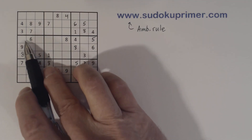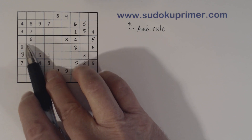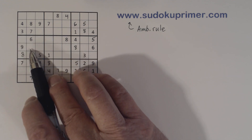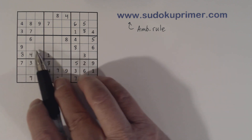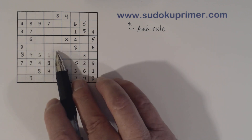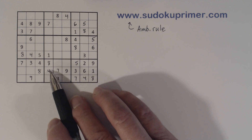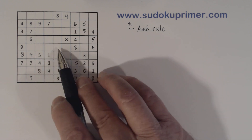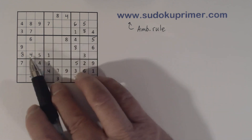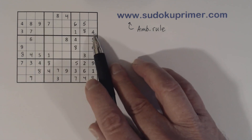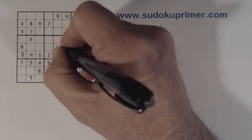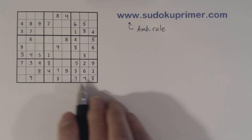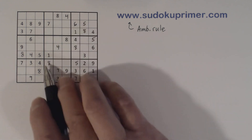Now that we've filled in the 4, we have 1-2 twins there. We can't solve them yet, but maybe pretty soon. When I place the 4 in here, there's only one more 4 missing in the puzzle, and that goes right there. Now we have all our 4s completed.